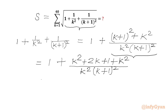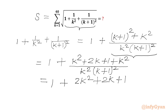This will be equal to 1 plus k squared plus k squared, which will be equal to 2k squared, plus 2k plus 1 in the numerator. In the denominator we will write k squared times (k+1) whole squared.